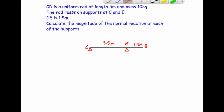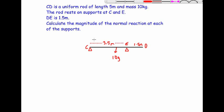This is a uniform rod, which means its weight acts at the center of the rod. So we add a downward force at the midpoint. Its mass is 10 kilograms, so its weight is 10g acting downward. From C to E is 3.5 meters, and from C to the point where its weight acts is 2.5 meters.